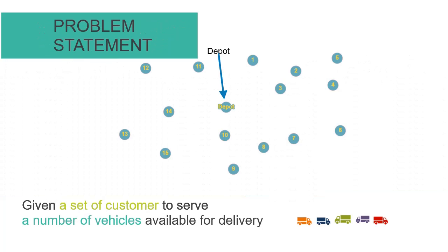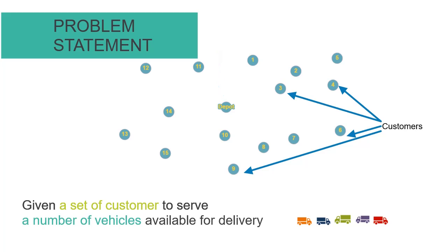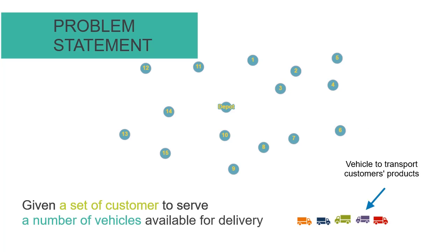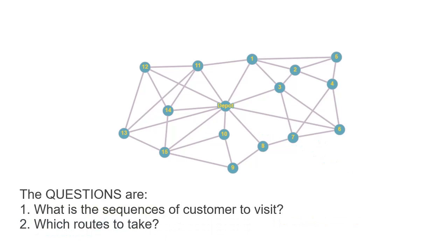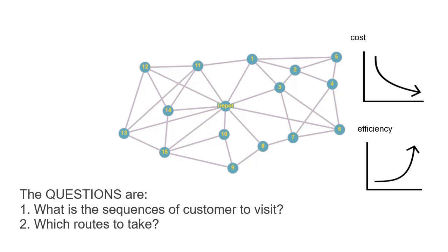In this example, we have a single depot and multiple customers. Vehicles are available to perform deliveries to fulfill customers' demand. Based on customers' locations, the distance between customers and the depot can be easily calculated using the distance formula. The questions are: what is the sequence of customers to visit, and what is the best route to take such that the operational cost and distance are minimized and efficiency is increased? This problem is known as the vehicle routing problem.